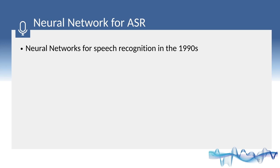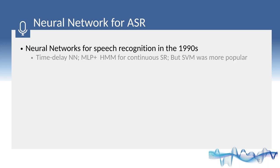In the 1990s, several simple neural networks were tried in continuous speech recognition, such as time-delay neural networks and MLP combined with HMM. However, Support Vector Machines performed better than neural networks and became more popular than ANN at the time.